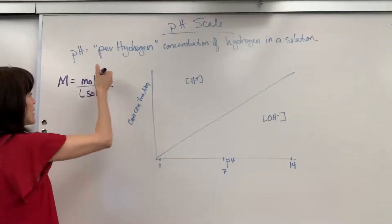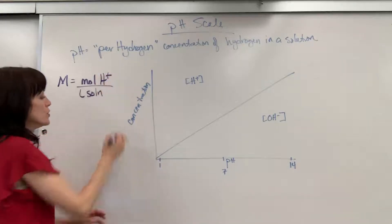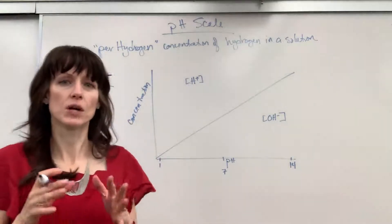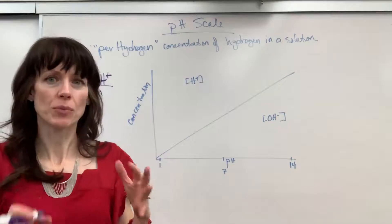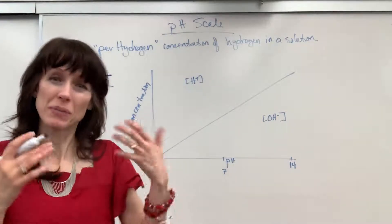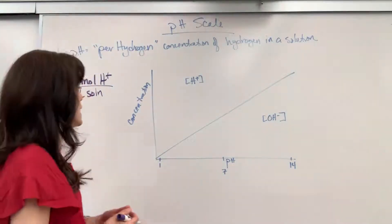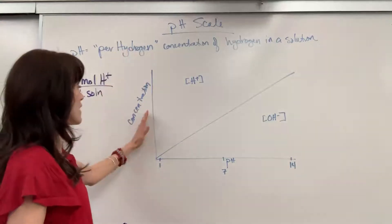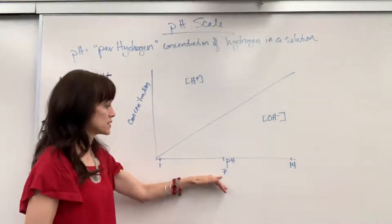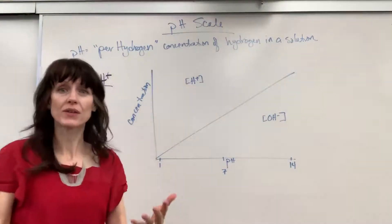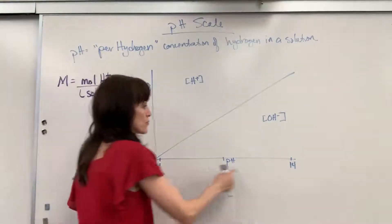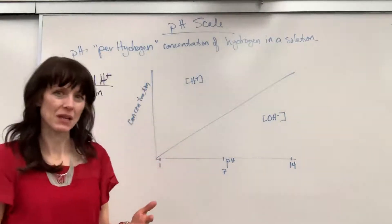So I've put a graph right here and I love this graph. You can recreate this graph and it will help you understand at any point when you're taking a test what pH is, that Per Hydrogen. So on the y-axis we have concentration, the x-axis we have the pH scale. Now you know that the pH scale goes from 1 to 14, but really what does that mean?